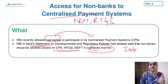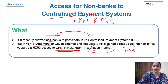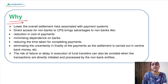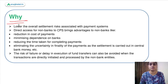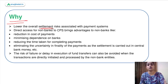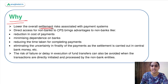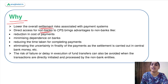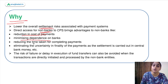In the first phase, certain entities will be allowed to use the centralized payment system. This step has been taken because it will reduce the overall settlement risk — non-banks won't have to approach a bank for providing these services. It will help them reduce costs, minimize their dependence on banks, reduce the time taken for completing payments, and eliminate uncertainty.